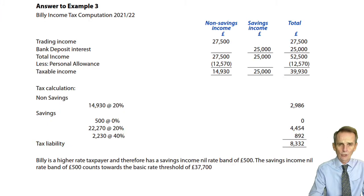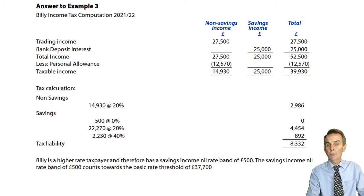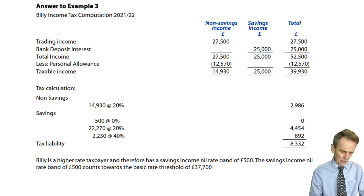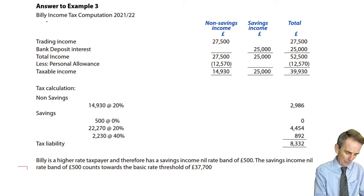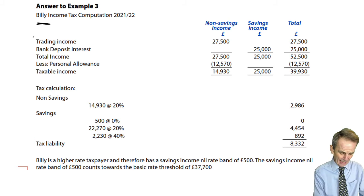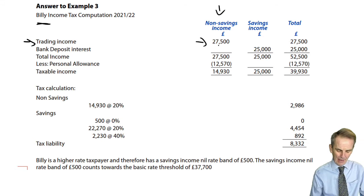At the end of our second session together, I left you with a little exercise to do at home - example three. In example two, we got introduced to our hero, Billy. And Billy, as in example two, still has a trading income figure - trading income being non-savings income, amounting to £27,500.